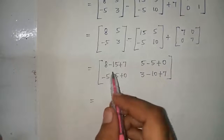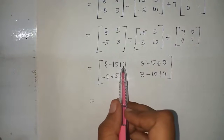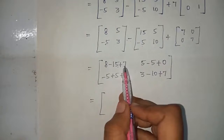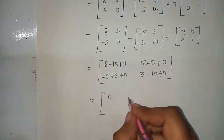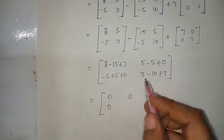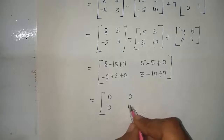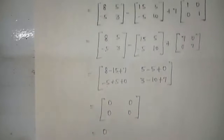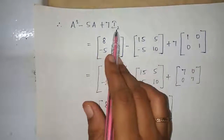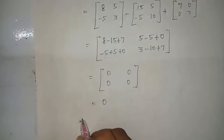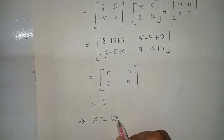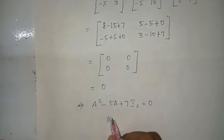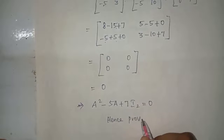Each element evaluates to zero: 8 minus 15 plus 7 equals 0, 5 minus 5 equals 0, minus 5 plus 5 equals 0, 3 plus 7 equals 10 minus 10 equals 0. The result is the zero matrix — the null matrix. Hence we proved that A squared minus 5A plus 7I₂ equals 0. Thank you, students.